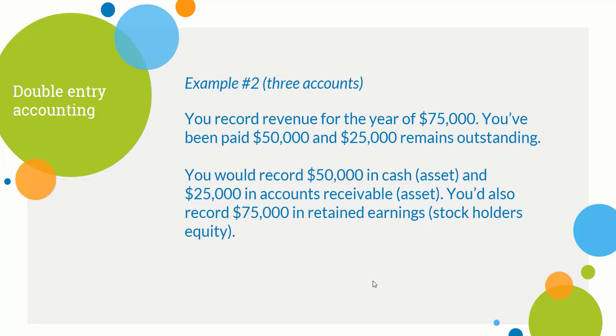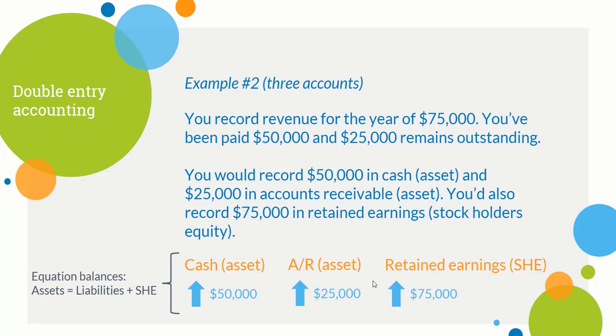You'd also record $75,000 in retained earnings, which is within stockholders' equity. That's how the balance sheet and income statement tie together — you take net income and put it in retained earnings at the bottom of the balance sheet. So cash goes up $50,000, accounts receivable goes up $25,000, and retained earnings goes up $75,000. Assets increased by $75,000 and retained earnings increased by $75,000 — the accounting equation balances.